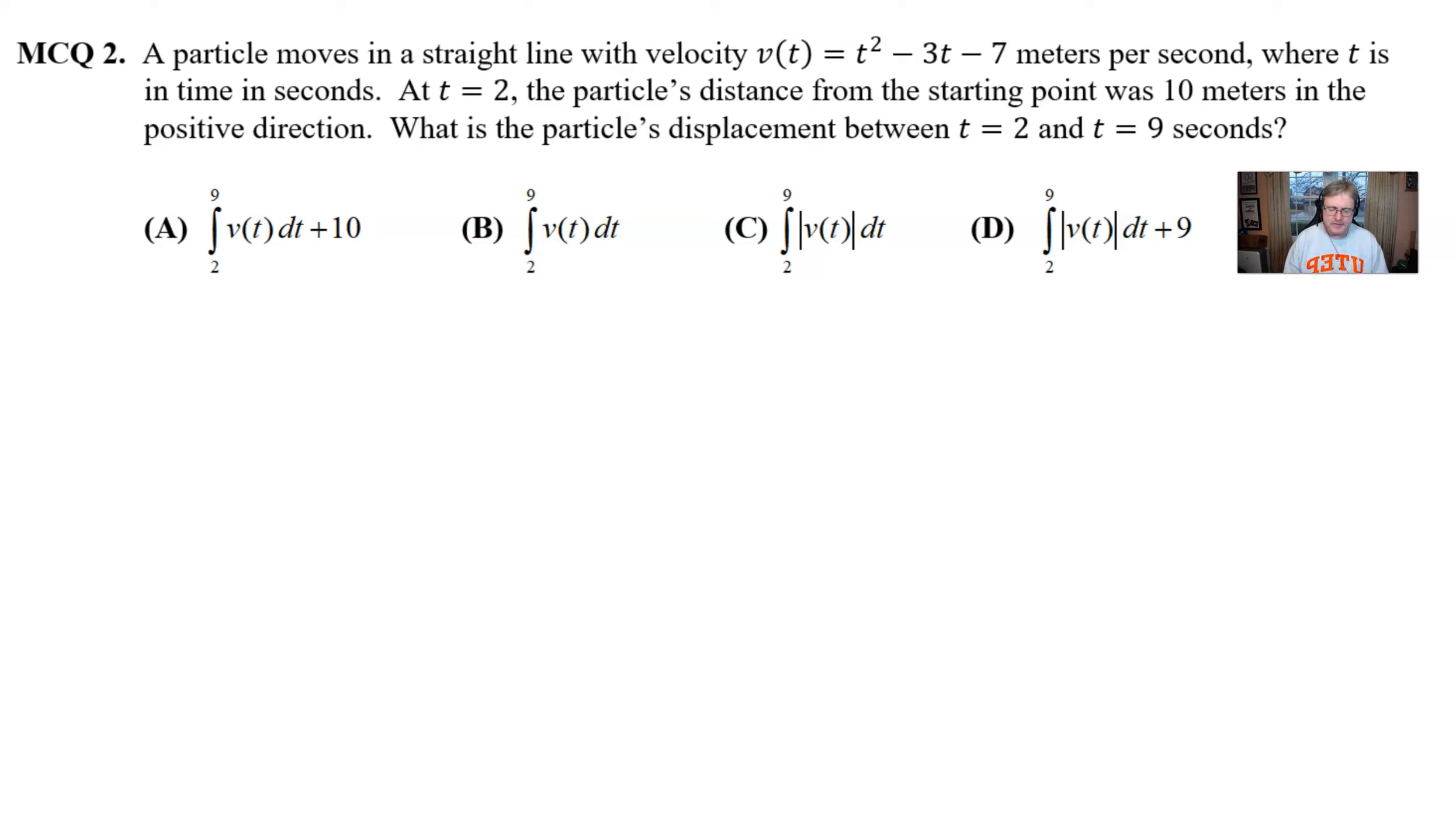Now, this one's a bit tricky. If you look through the choices, perhaps your eyes are drawn to maybe choice c, where we have the absolute values, but we are not going to opt for this answer because this would be the total distance once again. And I'll refrain from saying from time t equal 2 to 9 because I think that's pretty obvious.